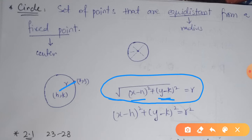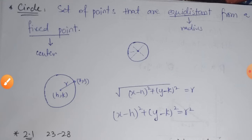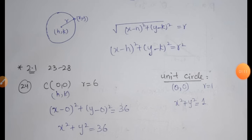The square root of (X minus H) whole square plus (Y minus K) whole square is equal to R. Taking the square on both sides, we get the standard form of the equation of a circle. So if you are given the center point and the radius, you can easily find the equation of a circle.